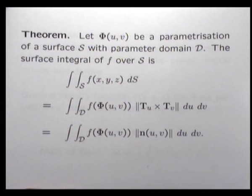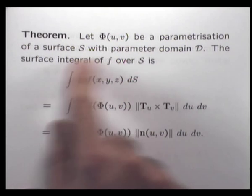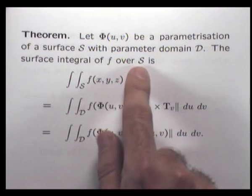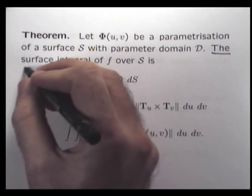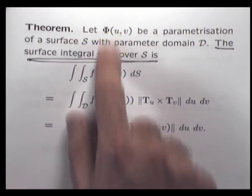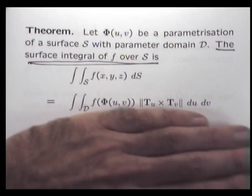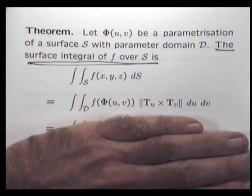Given some surface and a parametrization with domain D, this is how we denote the surface integral of a given function f over the surface S. In this theorem, we're told how to compute it in terms of the parametrization. I'm more comfortable with this notation because it's clear what we mean by this normal vector. Some texts write it both ways — be very careful about whether you're talking about a unit normal or how that normal is constructed.